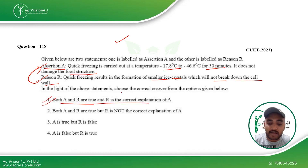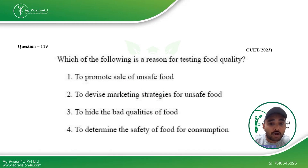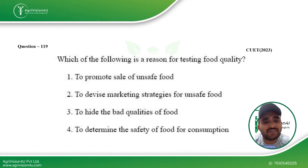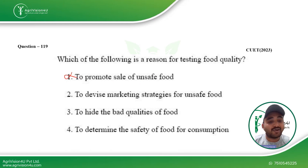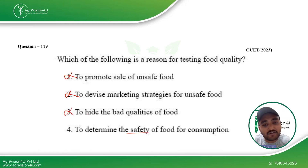Next question: which of the following is a reason for testing food quality? To promote the sale of unsafe food — no, that is completely opposite to food safety. To devise marketing strategy for unsafe food — no. To hide the bad qualities of food, which is what adulteration does — no. To determine the safety of food for consumption — yes, that is correct. So the fourth option is the right answer.